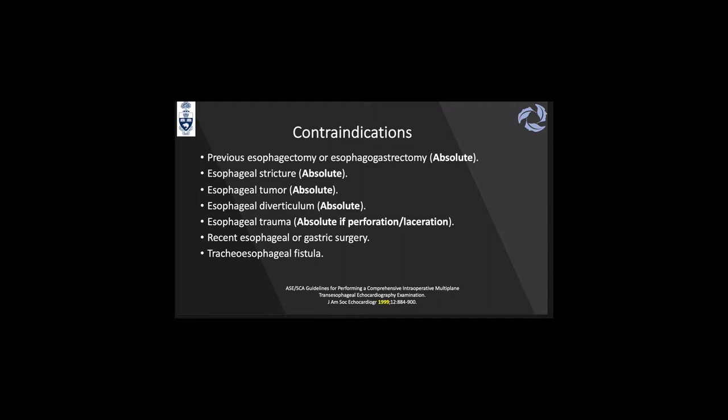Contraindications: the first report came in 1999 from the American Society of Echo and the SCA guidelines. Absolute contraindications include a non-intact esophagus, previous esophagectomy or esophagogastrectomy, an esophageal stricture, esophageal tumor, diverticulum, or esophageal trauma with perforation or laceration. Otherwise, it is a relative contraindication. Recent esophageal or gastric surgery and a tracheal-esophageal fistula are also relative contraindications.